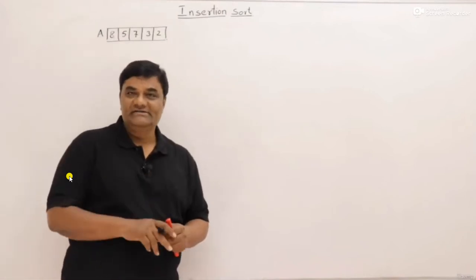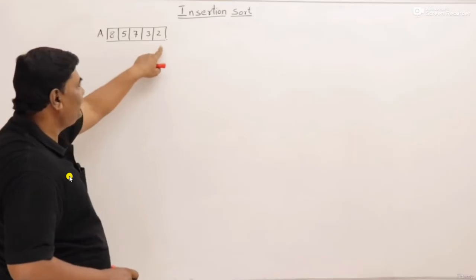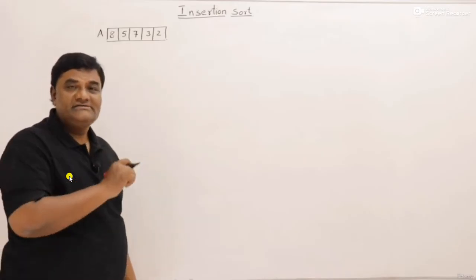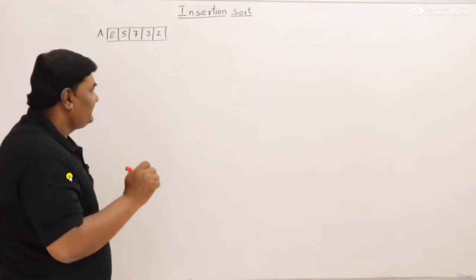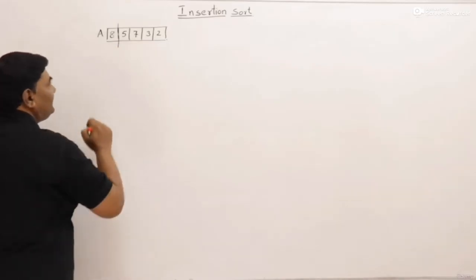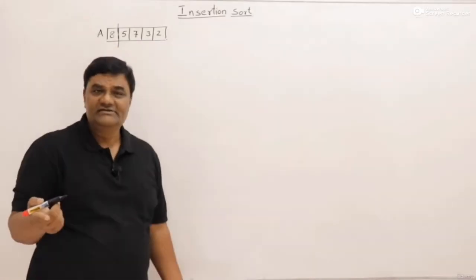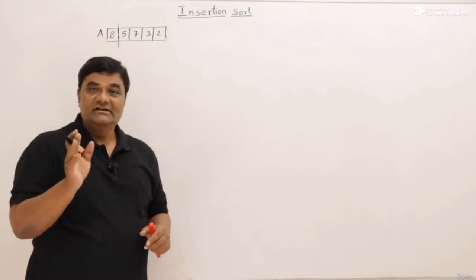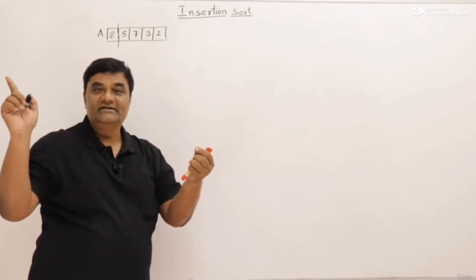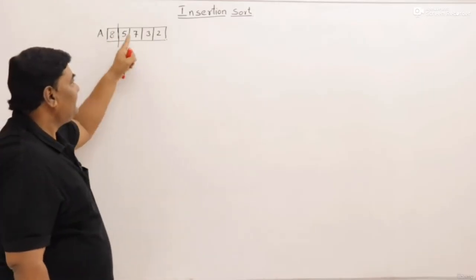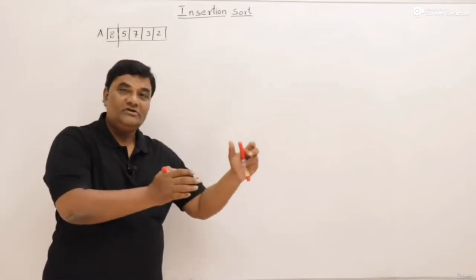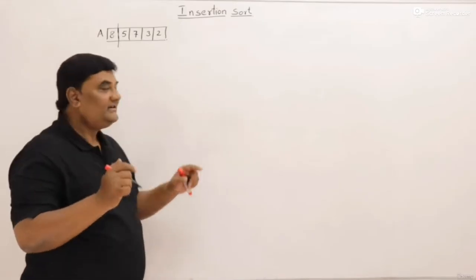For explaining insertion sort, I have taken an array of five elements. To reduce board work, I have avoided indices as they are not required. The very first thing is we assume that the first element is already sorted — if there is only one element, it is obviously sorted. The remaining elements are not sorted, so we take them out and insert them into the sorted side. Right now, one element, eight, is sorted and four elements are not sorted.